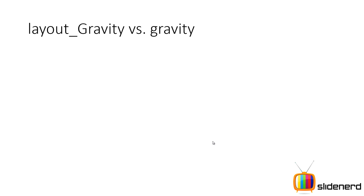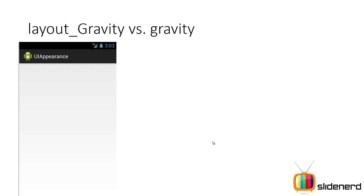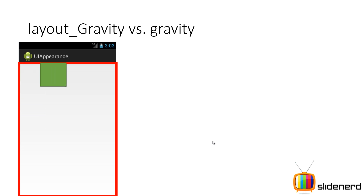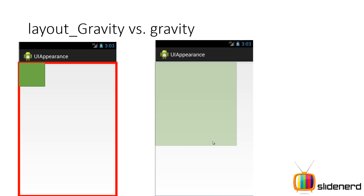Another question which people frequently have is: what is layout gravity and what is the difference between gravity? Now let me show you the difference. Here you have my user interface. This red rectangle represents my linear layout. This is my view, which can be a text view, a button, an edit text, or whatever. When you say layout gravity, it controls where your view will appear inside the layout. But on the other hand, when you talk about gravity, you have the same user interface with the view, and it controls where the content inside the view is going to take effect. The size of the view must be bigger than the content itself — in other words, it should not be wrap content for gravity to take effect.